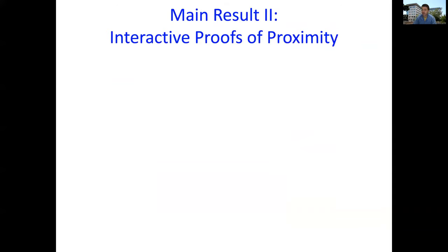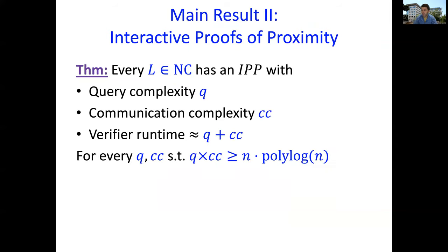That's the property testing view of what we'll do. Our second main result is a general interactive proof of proximity proving to you that an input is close to this property with the following properties. For every language in NC, every problem computable by a bounded depth circuit, has an IPP in which the number of queries is Q and the communication is CC, where Q times CC can be any quasi-linear function in N.